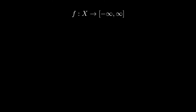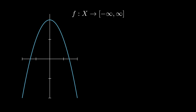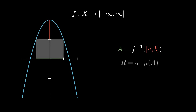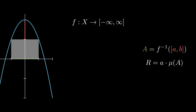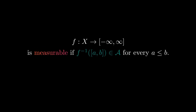Now that we know how the domain of a function we want to integrate has to look, we should look at which functions from a measure space to the real numbers can be integrated. If we take a part of the range of the function and want to approximate the function in this region, we can look at where the function takes on the values in this part of the range — this is called the pre-image. Then we fit a rectangle under the graph. The area of the rectangle is the lower bound of the interval times the measure of the pre-image of the interval. To justify this, we have to assume that the pre-image is measurable — this leads us to the definition of a measurable function.